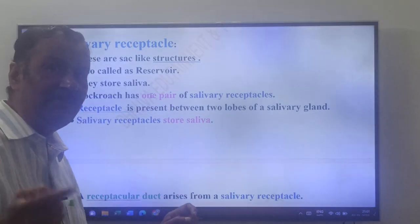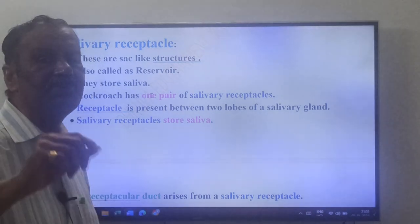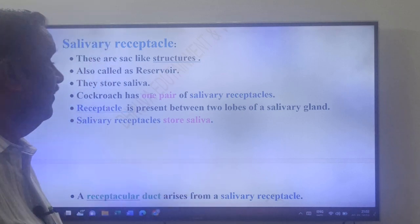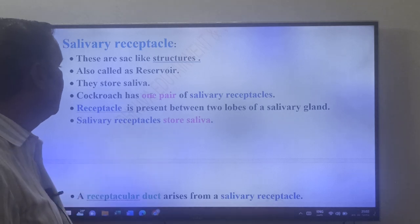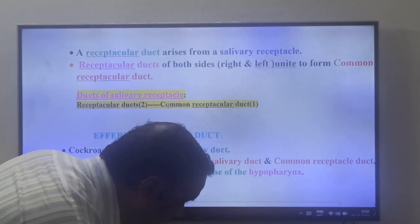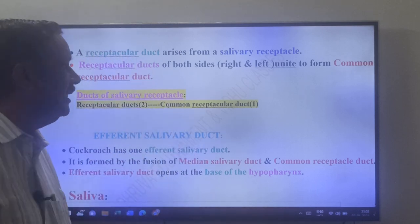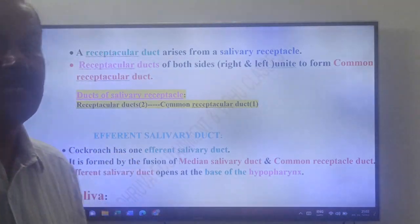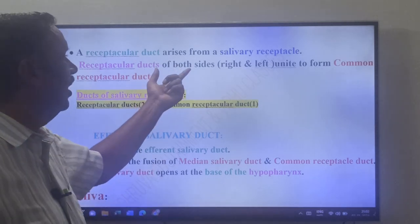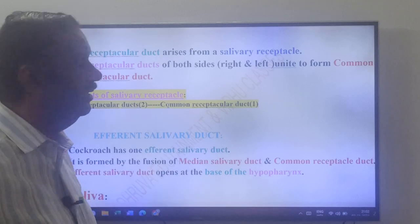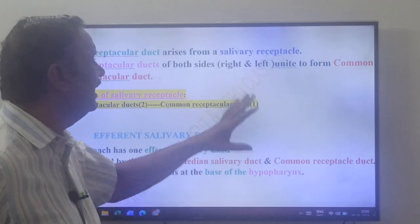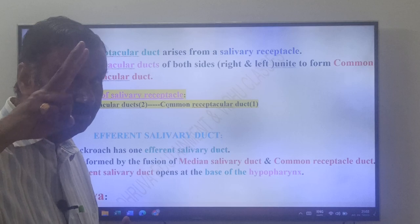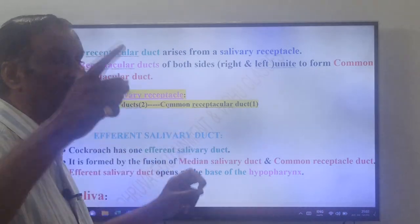The salivary receptacles (salivary reservoirs) are present between the two lobes of the salivary gland and store saliva. A ductule arises from each salivary receptacle, called the receptacle duct. The two receptacle ducts from the right and left sides unite to form a common receptacle duct.